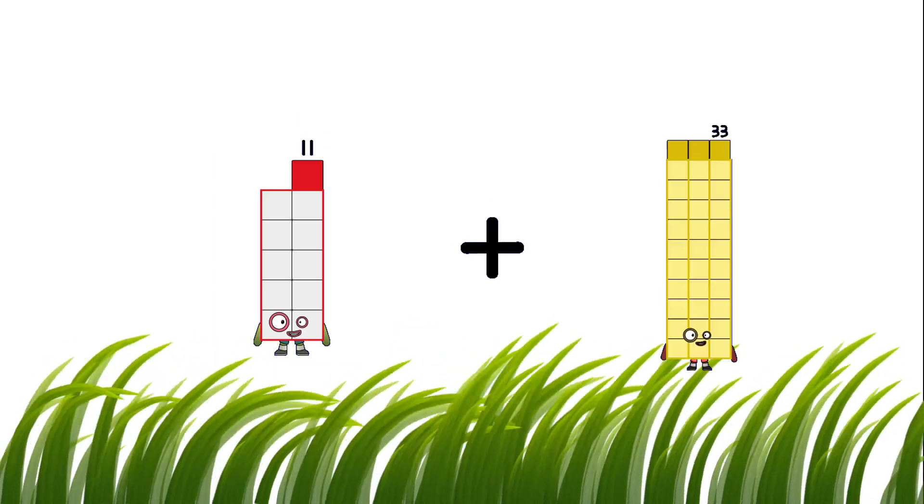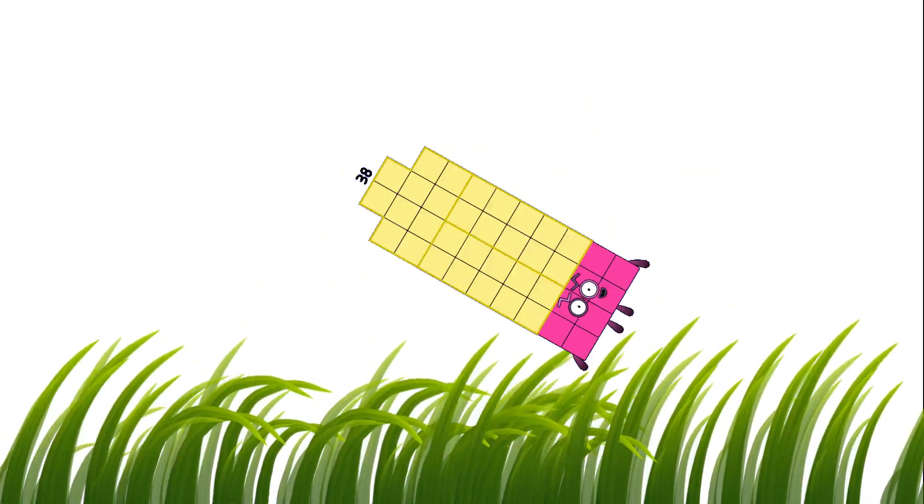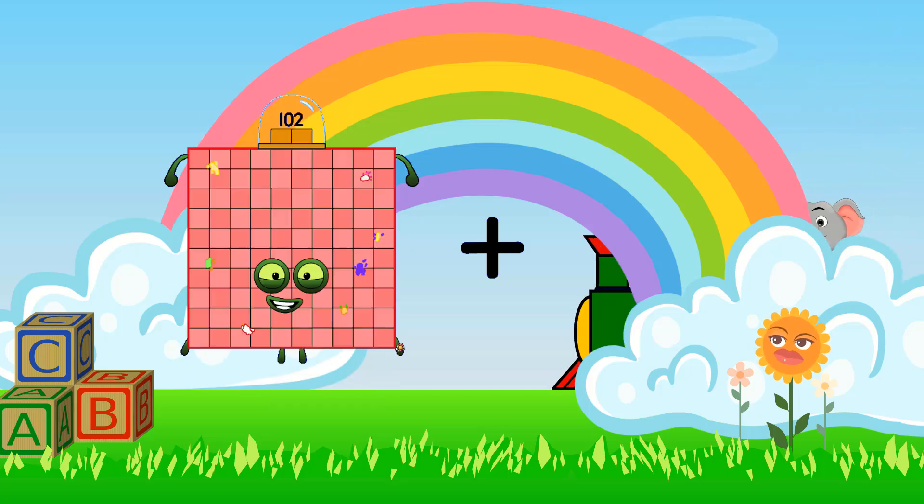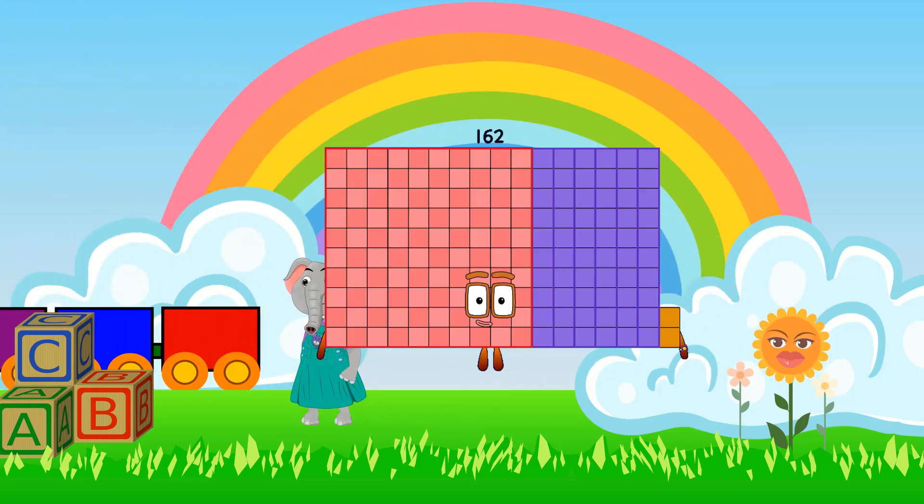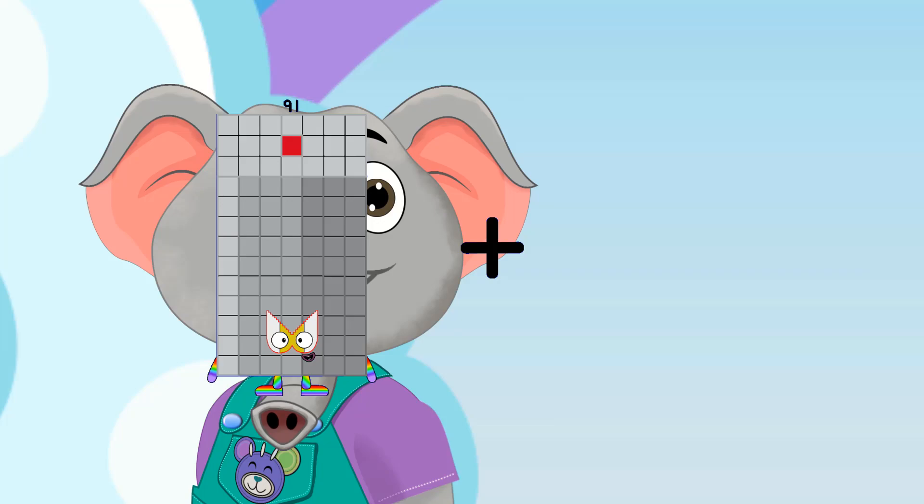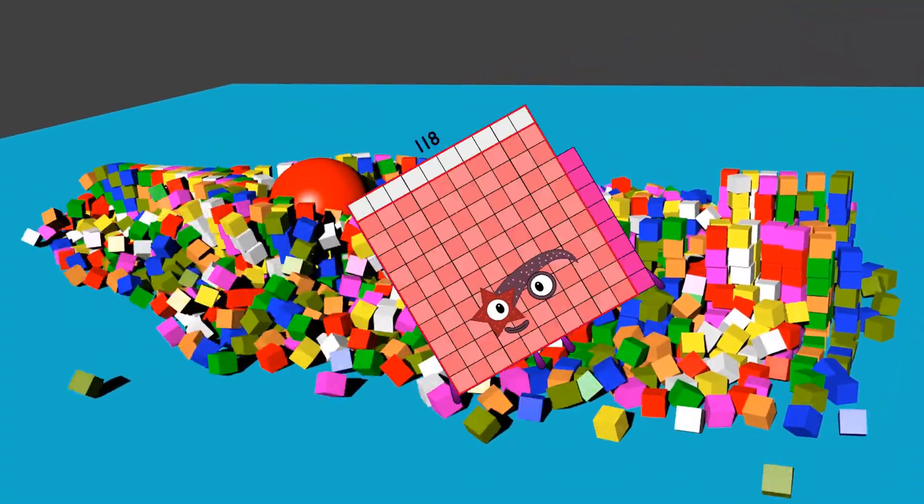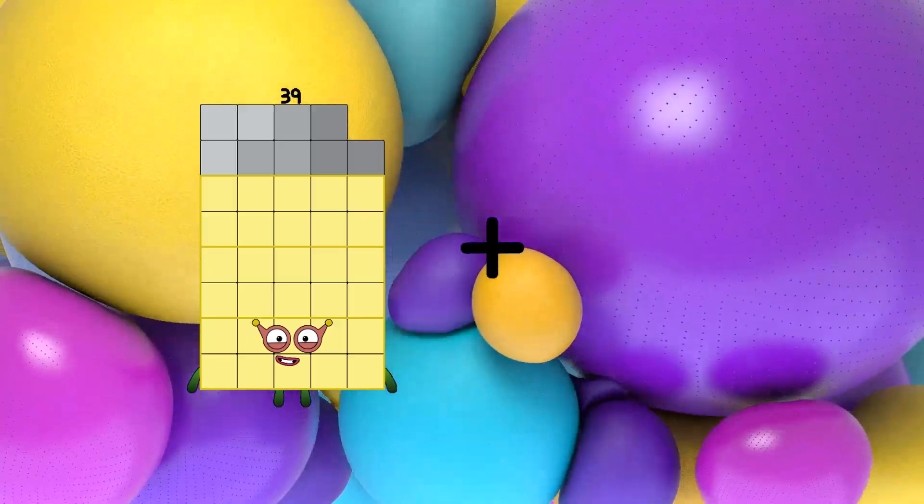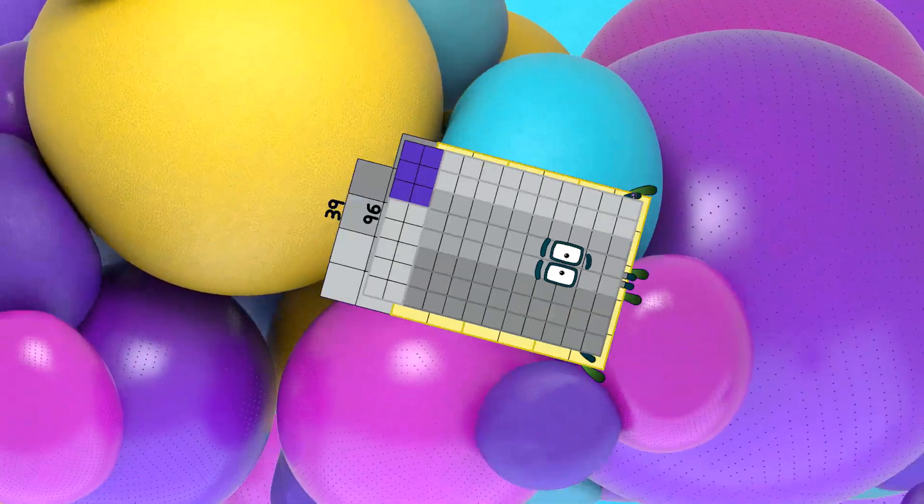11 plus 38 equals 49. 102 plus 60 equals 162. 91 plus 27 equals 118. 39 plus 96 equals 135.